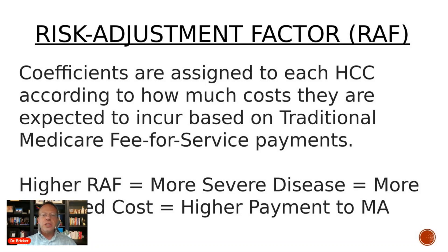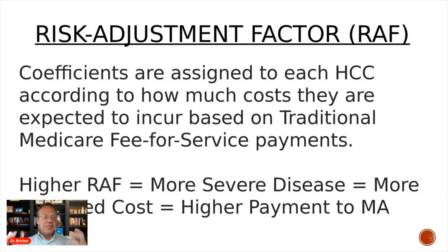Coefficients are assigned to each HCC according to how much cost they are expected to incur on traditional Medicare fee-for-service payments. They take traditional Medicare claims and look at how much cost people with these conditions create, and then base the coefficients off of that. Therefore, the higher the risk adjustment factor, the more severe the disease, the higher the cost, and then the higher the payment to Medicare Advantage.